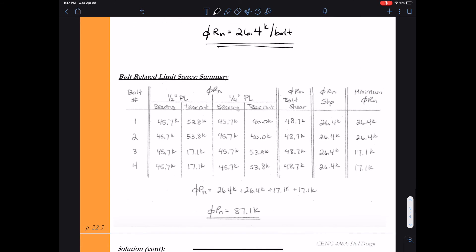The rest of the calculations proceed just as they did when we looked at a bearing type connection. For all the bolt related limit states, we need to create a table and that will include bearing, tear out, and bolt shear. And now I've added a column to represent the slip resistance of each bolt, the slip resistance being 26.4 kips.